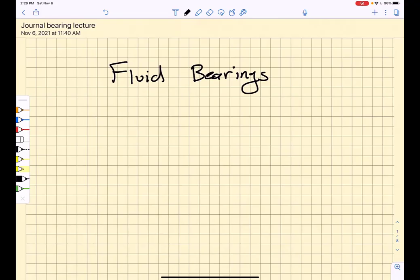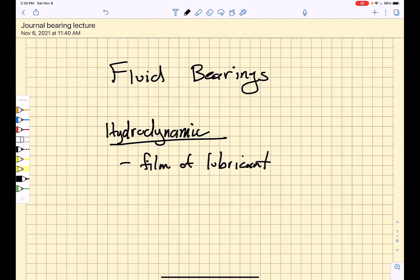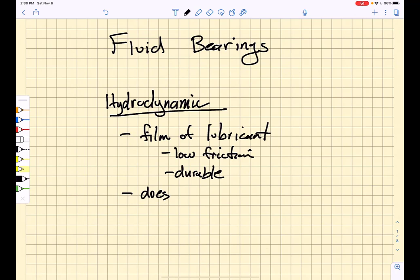We spent a lot of time talking about rolling contact bearings where we develop contact stress fields between the bearings and the races. Now we want to talk about fluid bearings, and the most common fluid bearing that we will encounter is the hydrodynamic bearing. Hydrodynamic bearings separate surfaces by a film of lubricant. The advantage of such a thing is that it is low friction, and if you take care of the fluids and keep all the dirt out of the fluids, then they're very durable. They can last a really long time and do not require pressure because the moving parts pull the fluid between them. That's why they're called hydrodynamic.